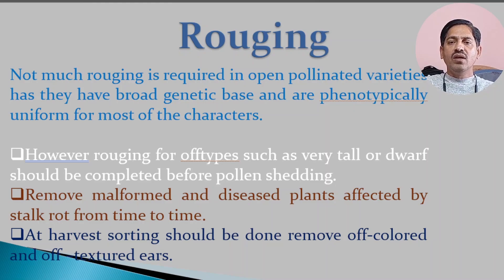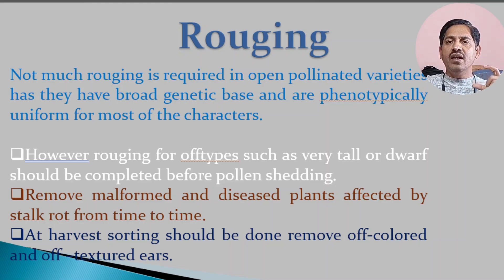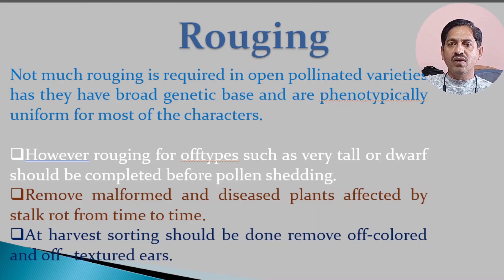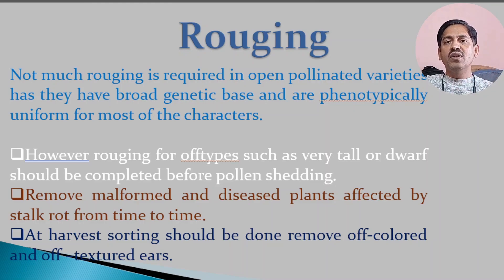During roguing, you must take care of tall plants, early flowering plants, late flowering plants, and any plants that differ from the majority of the crop. If you have some plants that are tall or dwarf or otherwise different from the majority, those are called off-types and must be removed from the seed production plot.